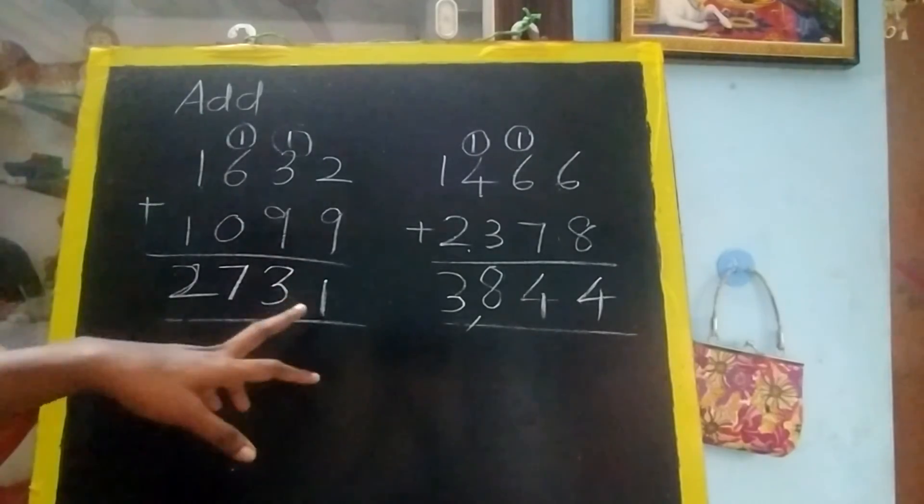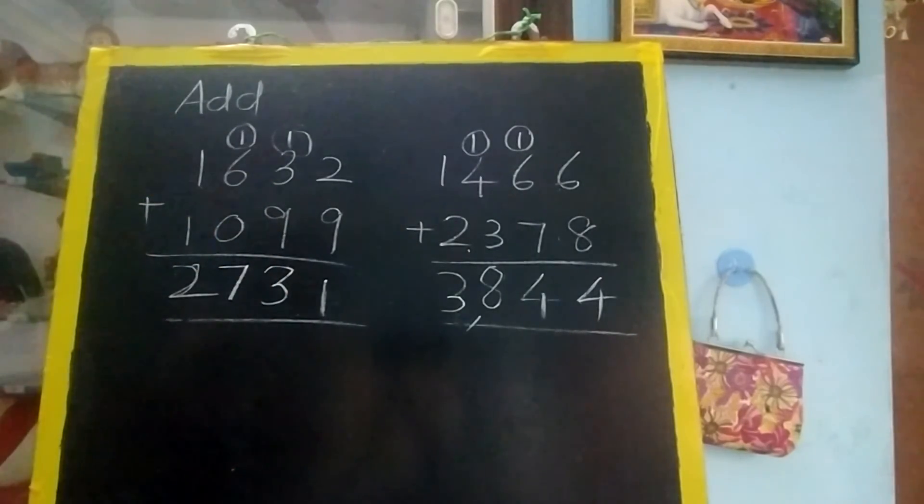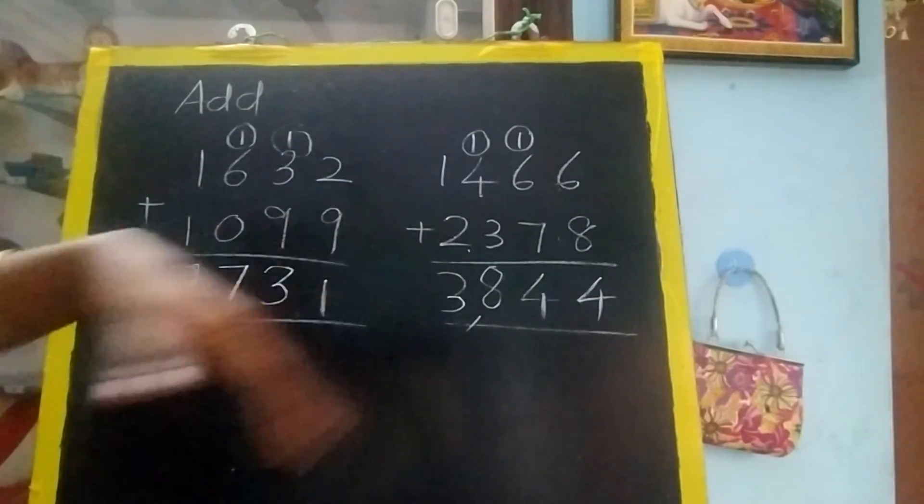When carry-over comes, you have to carry over. Zero with any number is the same number in addition. Write one more number in one box and leave two boxes gap.